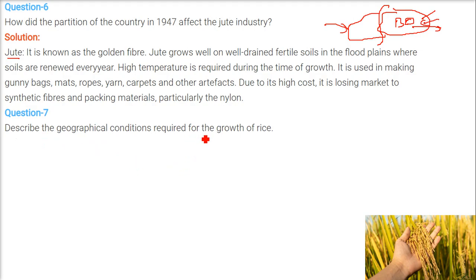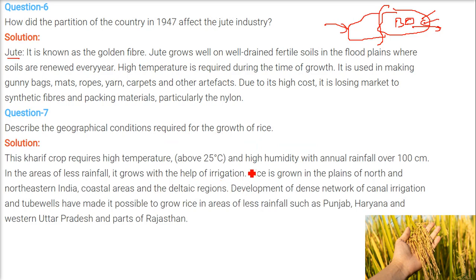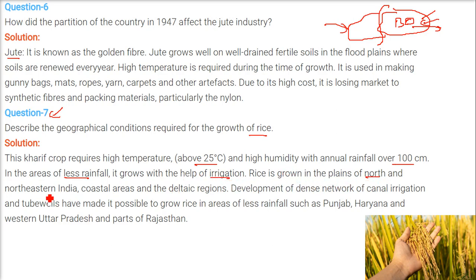Describe the geographical conditions required for the growth of rice. Rice is a Kharif crop and it requires higher temperature — about 25 degrees centigrade — and high humidity with annual rainfall over 100 centimetres. In areas of less rainfall it grows with the help of irrigation. Rice is grown in the plains of north and northeastern India, coastal areas and deltaic regions. Development of a dense network of canal irrigation and tube wells has made it possible to grow rice in areas of less rainfall such as Punjab, Haryana, western Uttar Pradesh and parts of Rajasthan.